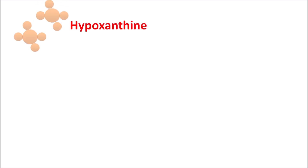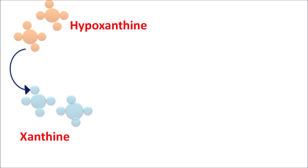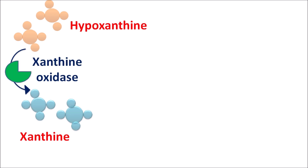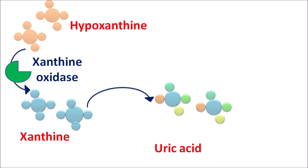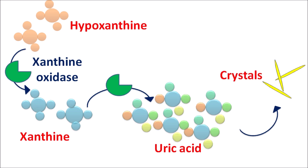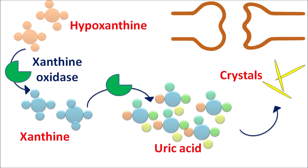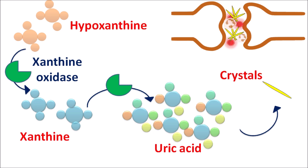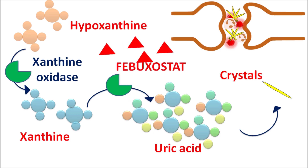One important precursor for uric acid is hypoxanthine. Hypoxanthine is converted into xanthine by oxidation mediated by the enzyme xanthine oxidase. Xanthine is then converted into uric acid by the same enzyme. Increased action of xanthine oxidase leads to more uric acid synthesis, resulting in crystal formation. These undissolved crystals can grow larger and be deposited within the joints as monosodium urate crystals, stimulating inflammation and activation of neutrophils.